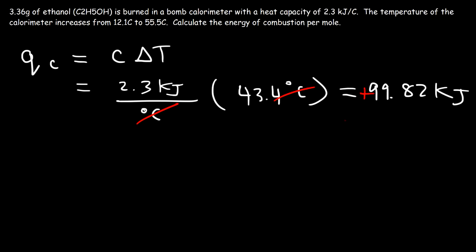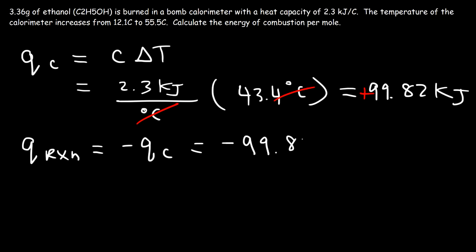Because the temperature of the calorimeter increased, the process is endothermic for the calorimeter — heat was absorbed by the calorimeter. That means heat had to be released by the reaction, so q of the reaction equals negative q of the calorimeter. The calorimeter is the surroundings and the reaction is the system; if the surroundings undergo an endothermic process, the system undergoes an exothermic one. Therefore, q of the reaction is negative 99.82 kilojoules.